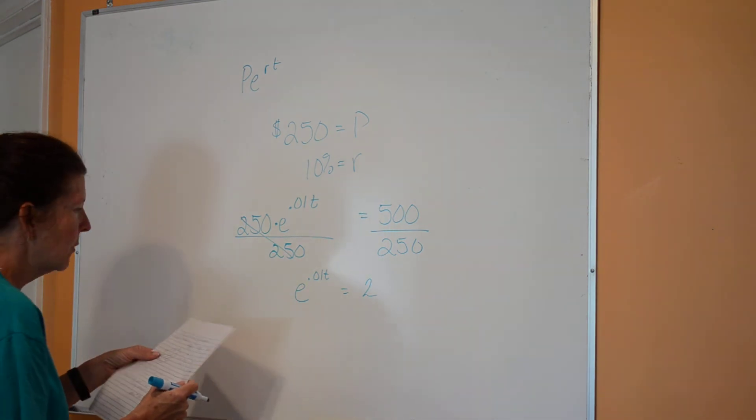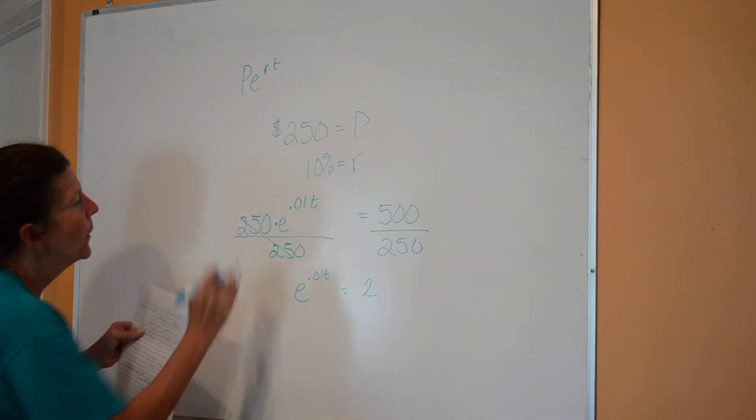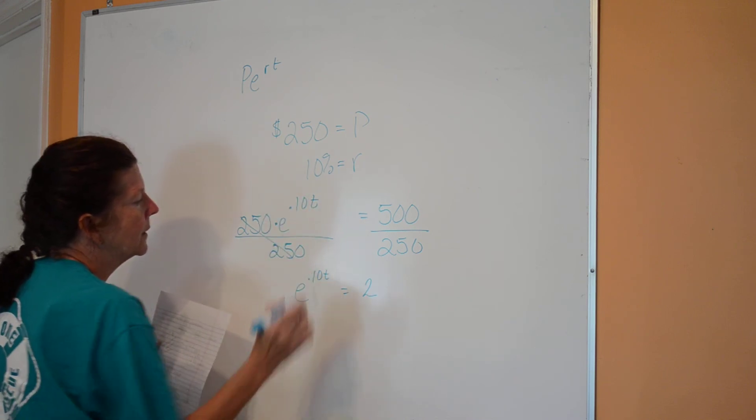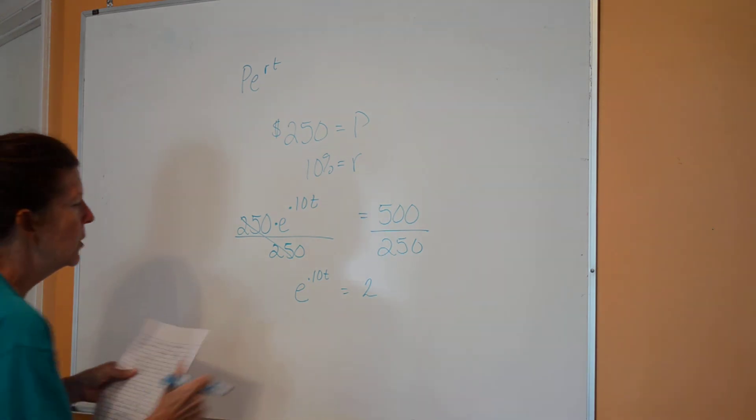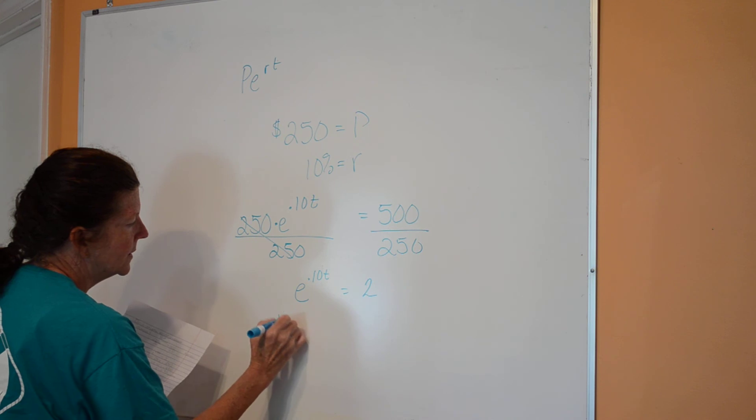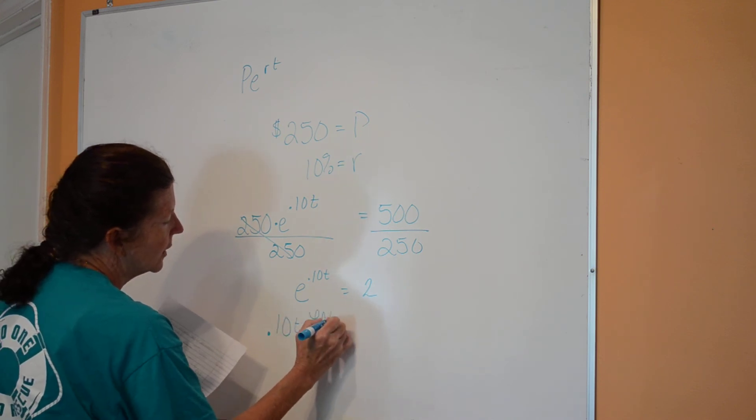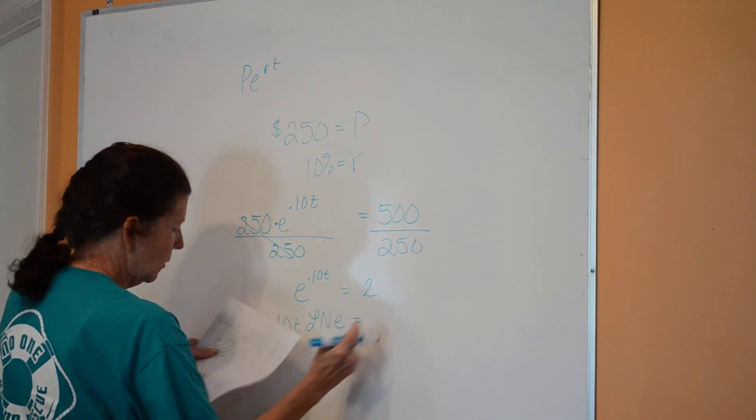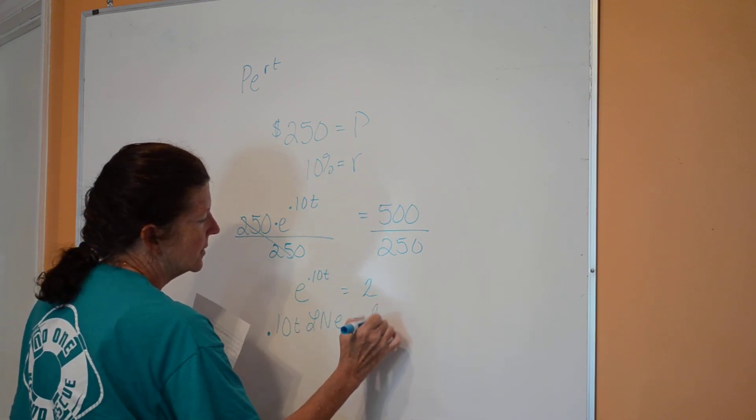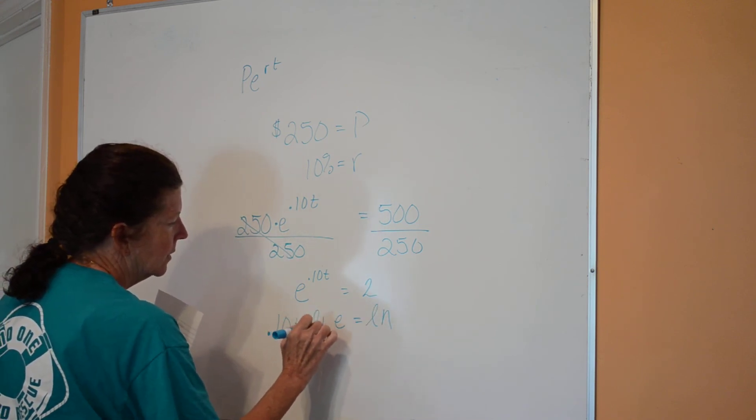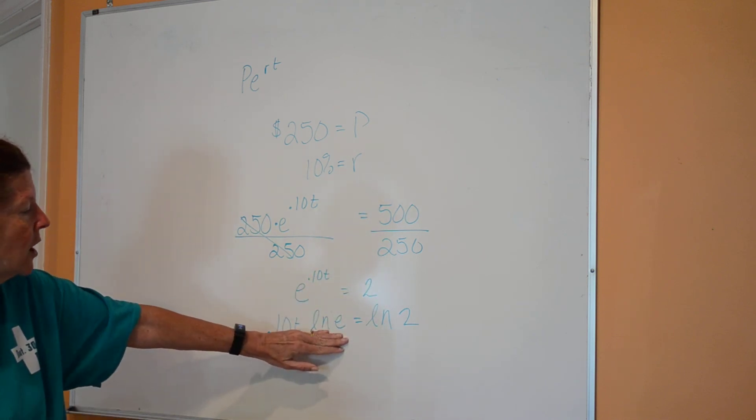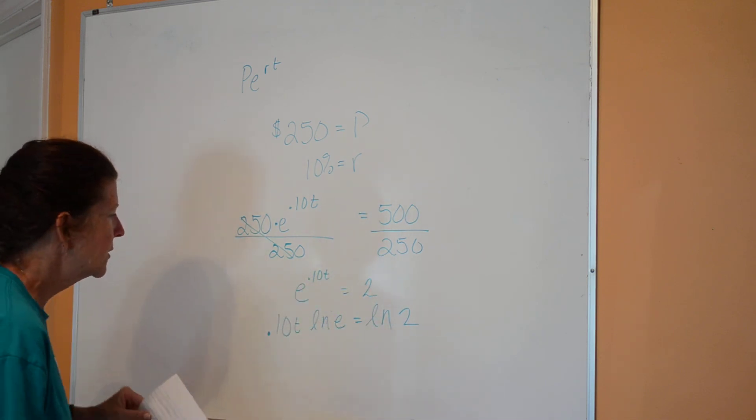You can see how this is different because my T is in my exponent position. So the very first thing I'm going to do is I'm going to divide both sides by 250. So what I have over here is e raised to the 0.1 T power is equal to 2. Now, this part right here, remember, can be moved to the front of it with a logarithm. So I have 0.10 T times the natural log of e equals, and what I do to one side I'm going to do to the other side. So I took the natural log on one side, I'm going to take the natural log on the other side.